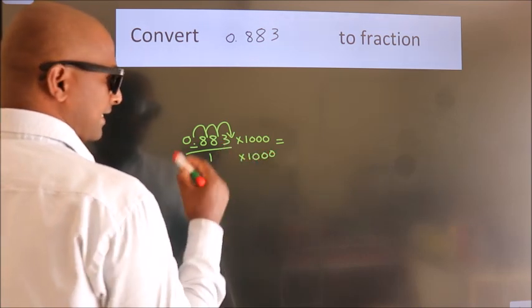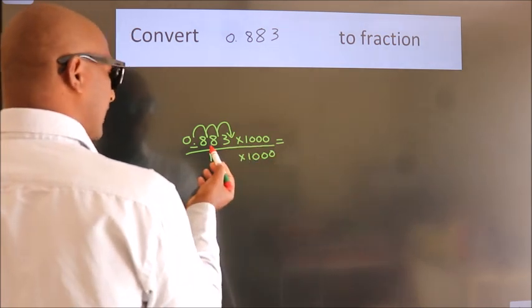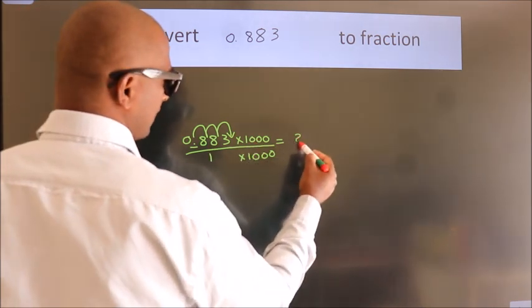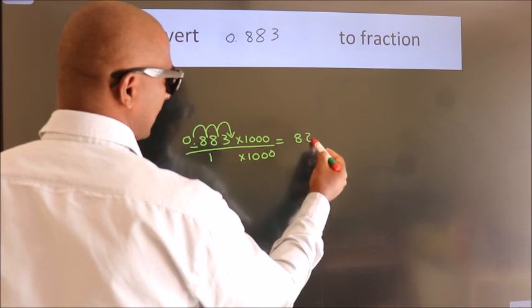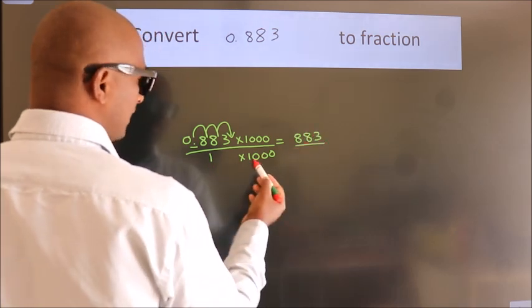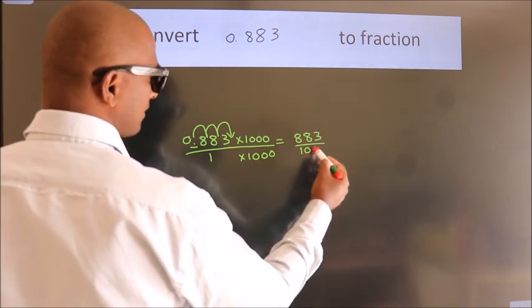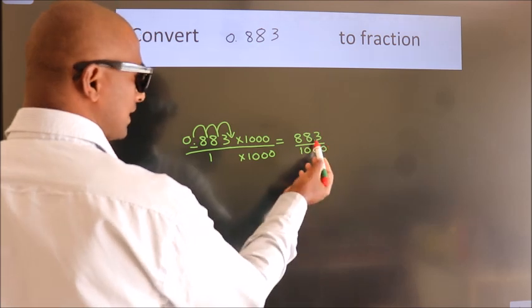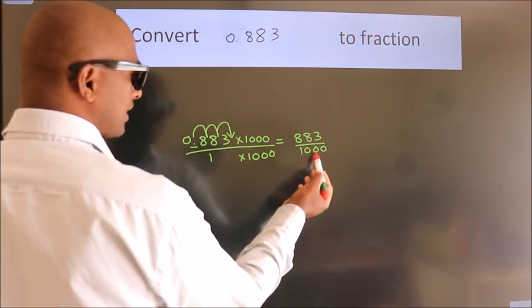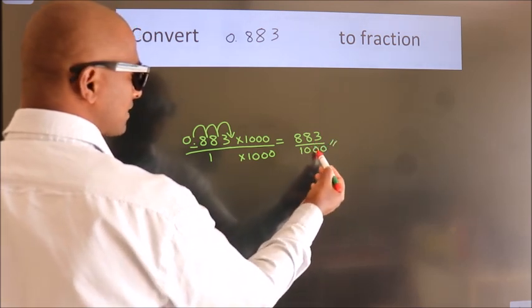0.883 into 1000 equals 883. 1 into 1000 equals 1000. This cannot be simplified any further, so this is our fraction: 883 over 1000.